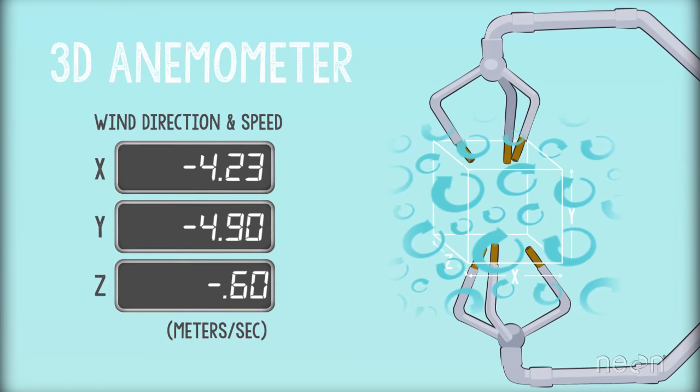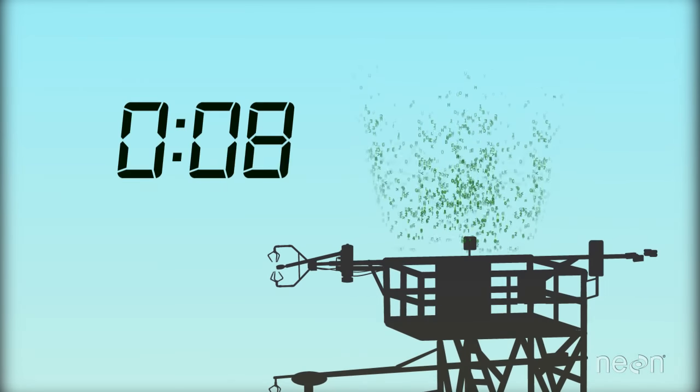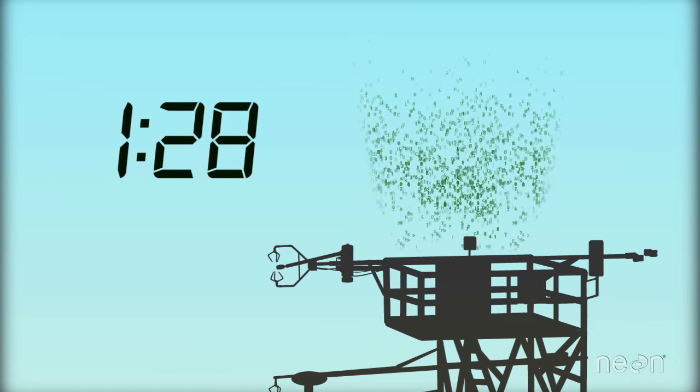The anemometer measures wind speed and direction. The infrared gas analyzer measures gas concentrations in the air. The data are collected simultaneously, thousands of times per minute.